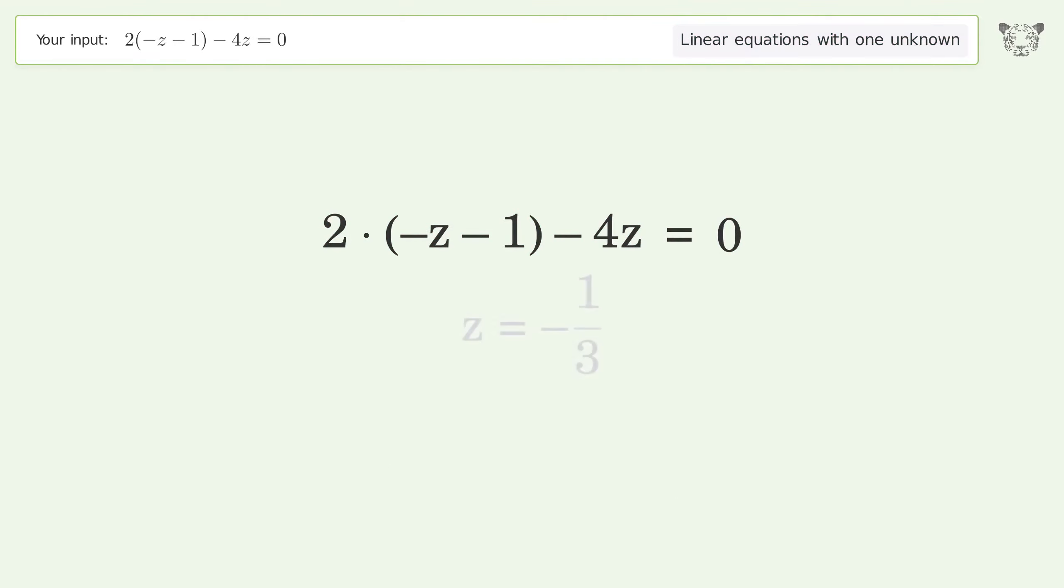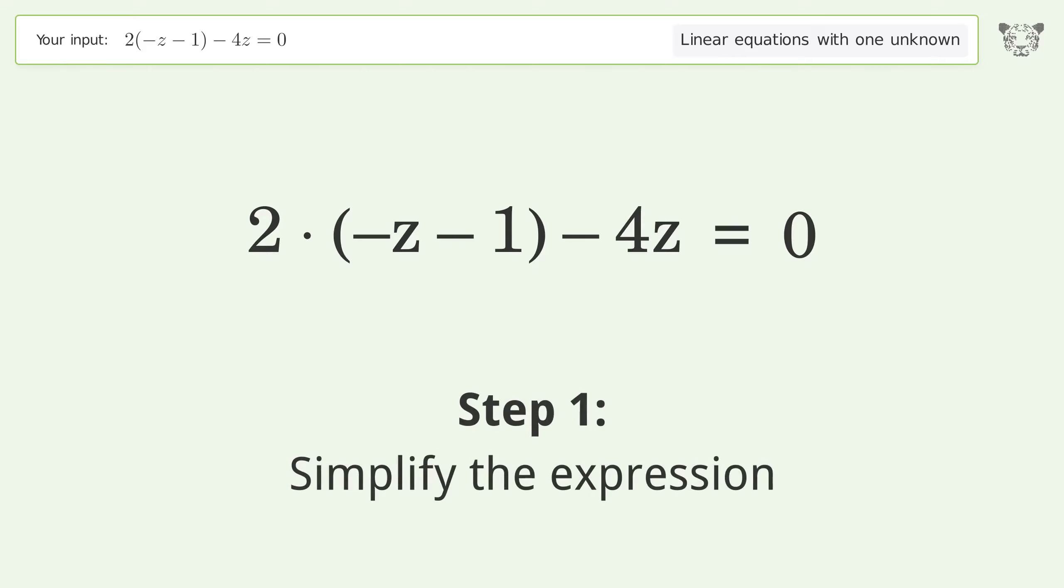You asked Tiger to solve this linear equation with one unknown. The final result is z equals negative one-third. Let's solve it step by step.